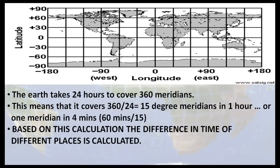The earth takes 24 hours to cover 360 meridians. This means that it covers 15 degree meridians in 1 hour, or 1 meridian in 4 minutes. Based on this calculation, the difference in time of different places is calculated.